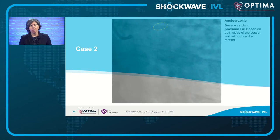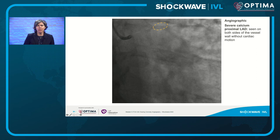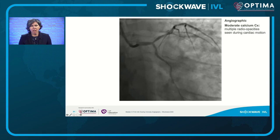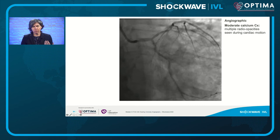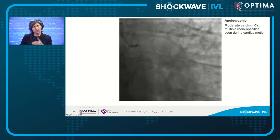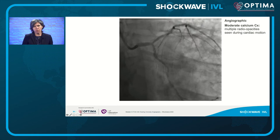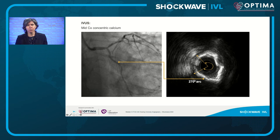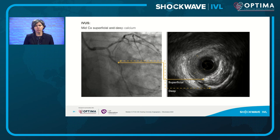In a second case, a still angiogram of the left coronary system shows severe angiographic calcification in the proximal LAD — calcium on both sides without cardiac motion. The circumflex calcification looks more moderate, with some calcium down the proximal-mid circumflex and a unilateral plate of calcium across the distal left main into the proximal LAD. Importantly, in the mid-circumflex where the angiogram suggested moderate one-sided calcium, the IVUS actually showed severe calcium with a 270-degree arc. There were also areas of combined superficial and deep layers of calcium clearly visible on IVUS.